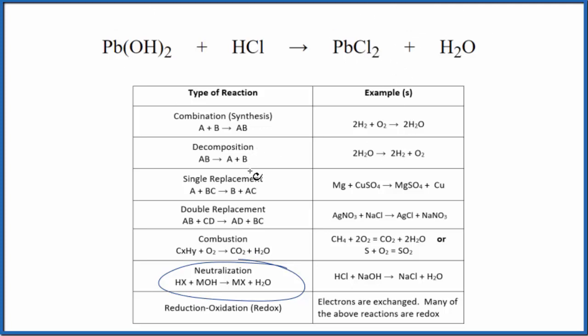This is also considered a double replacement reaction or a double displacement reaction. That's because the positive ions switch places. So the hydrogen comes here and the lead comes here. So instead of lead hydroxide, we end up with lead chloride, the lead(II) chloride here.